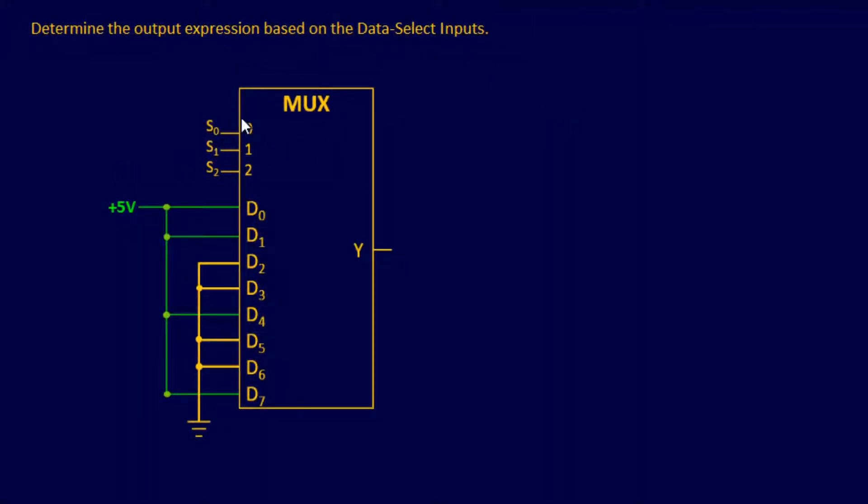For our last one, we have a nice little multiplexer right here. And we want to determine the output expression based on the data select inputs. So what does that mean? We want to know y, which is your output, based on these data select inputs.